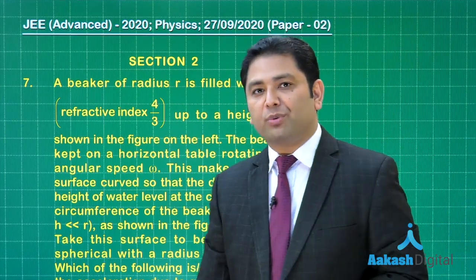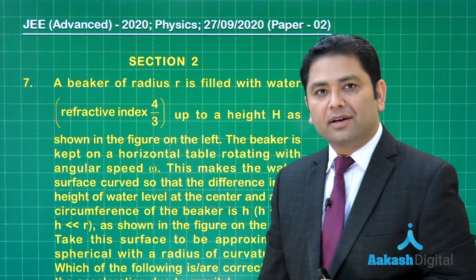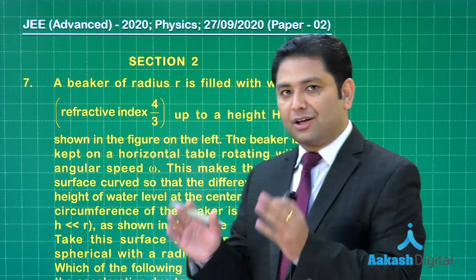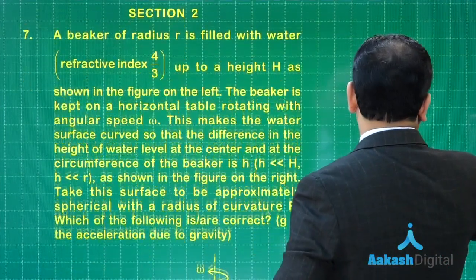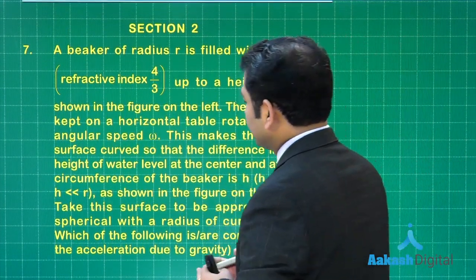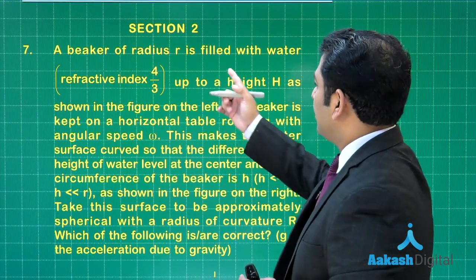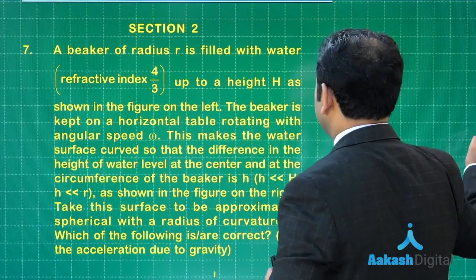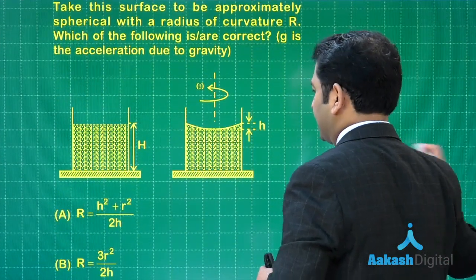Okay, with question number seven, now we make an entry into section two, and in section two, one or more than one options may be correct, so this requires lots of attention. Now what is this? Let us see. This is a very beautiful combination of properties of bulk matter and a little bit of optics as well. A beaker of radius small r is filled with water of refractive index up to a height capital H.